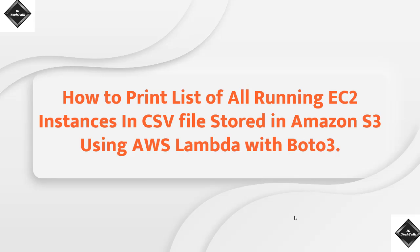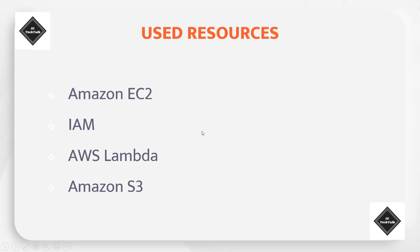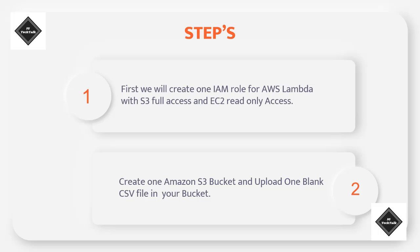Before going for the demo, we will quickly discuss what resources we are going to use and what steps have to be performed. The resources are: Amazon EC2, which we will list out; then we will use IAM role for our Lambda function; then we will use AWS Lambda service to create one Lambda function and write our own code; and at the last we will use Amazon S3.